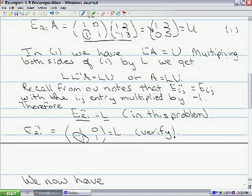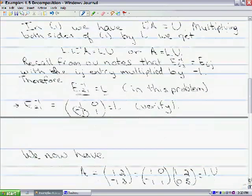And you might want to verify that E21 inverse here is actually correct by simply multiplying that by E21 and showing that you get the 2 by 2 identity matrix.